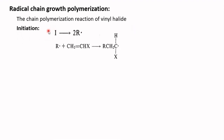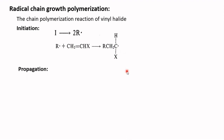In the initiation step, an initiator indicated by the symbol I undergoes decomposition to give two free radicals indicated by R•. The free radical so formed attacks the double bond of vinyl halide and generates a new radical called a chain radical.